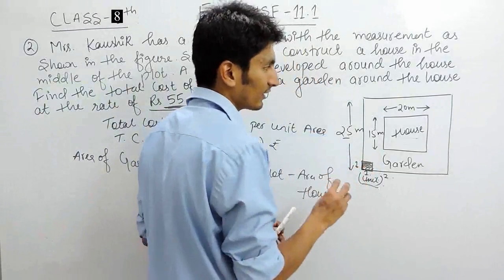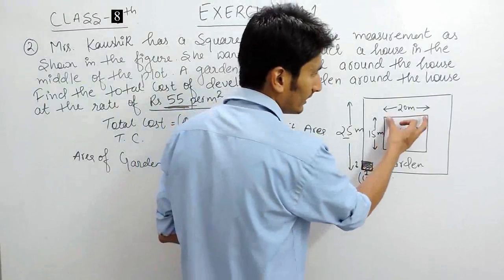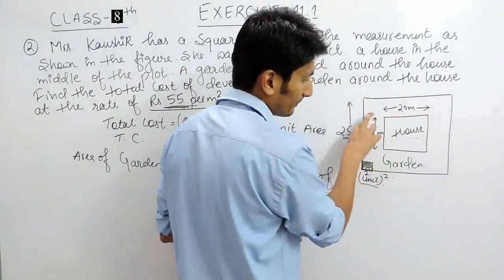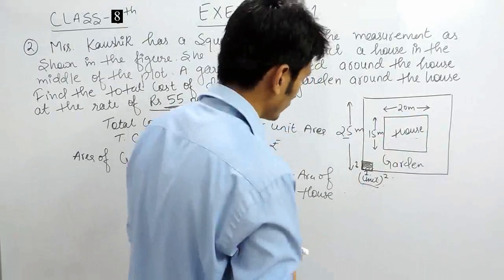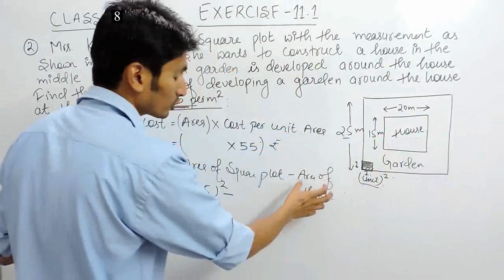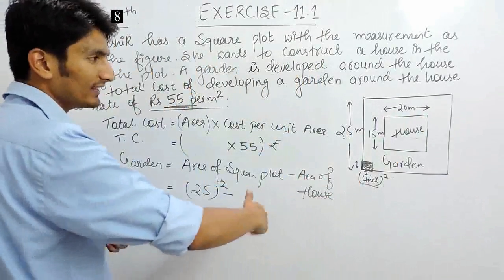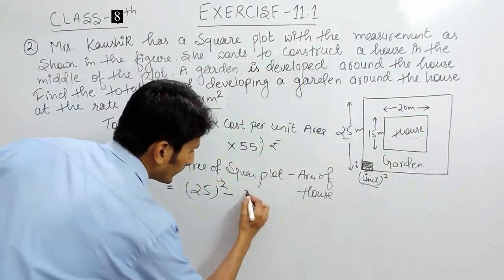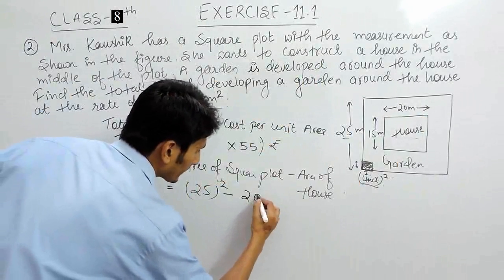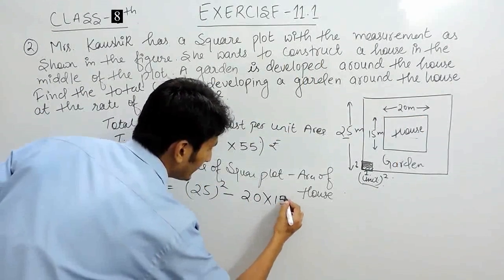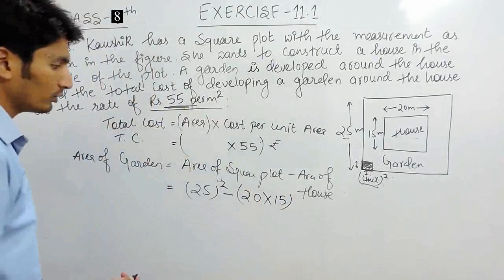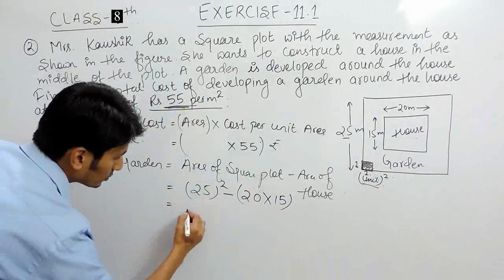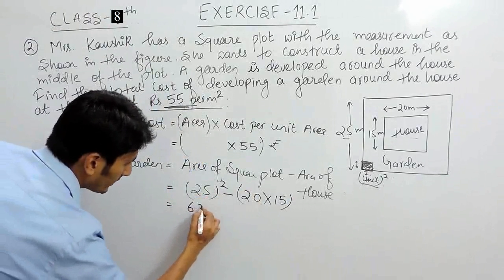The house is rectangular with length 20 meters and breadth 15 meters. So the area of the house is length × breadth = 20 × 15 = 300 square meters.